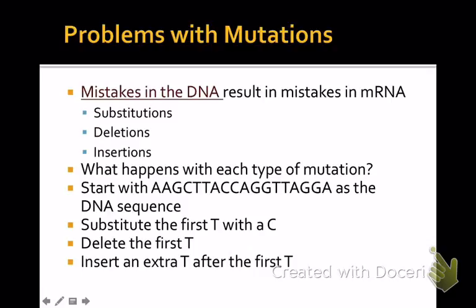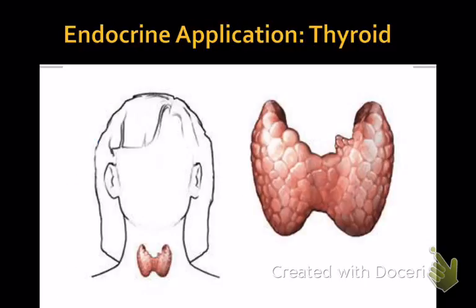Now we'll shift gears — after going through how proteins are synthesized, we'll look at an application involving the endocrine system. Texas decided the endocrine system belongs in ANP2, but we can't live without it, so we're teaching it throughout both parts of the course. Anything I put in here on the thyroid may show up on your test. This will be an application pulling together several themes we've already studied.